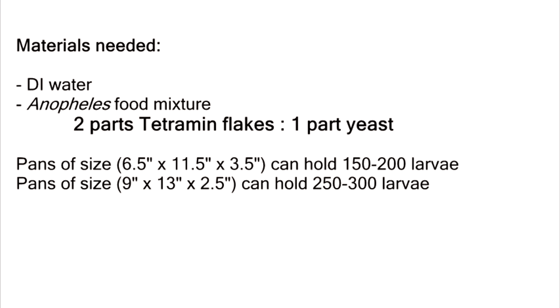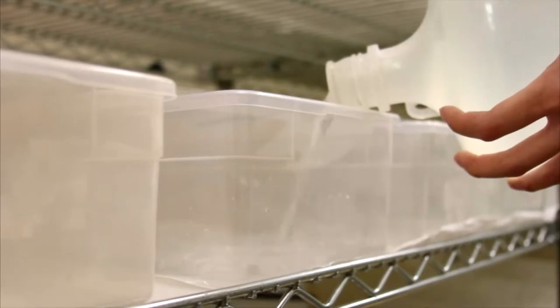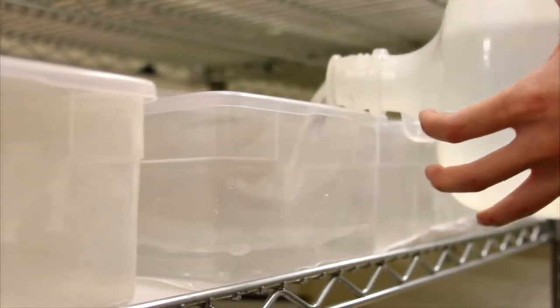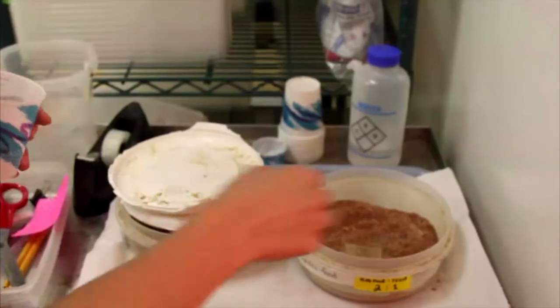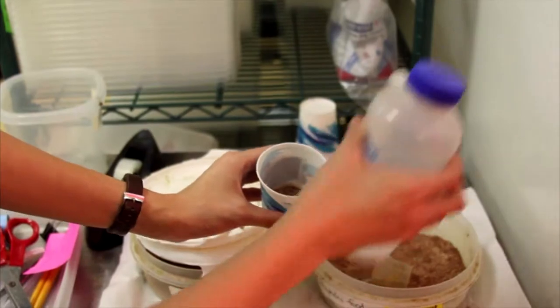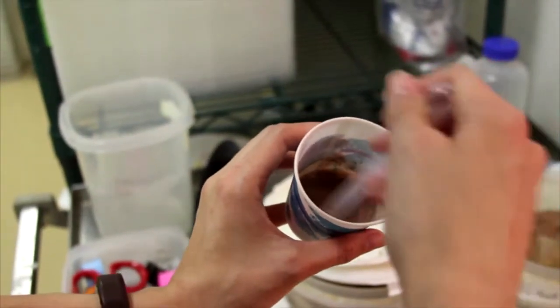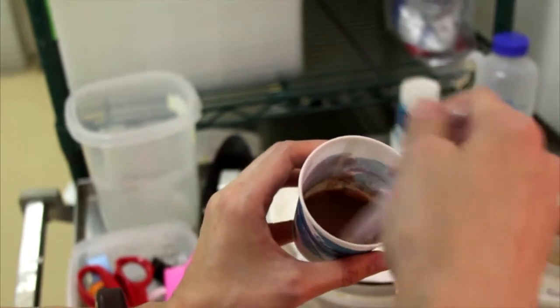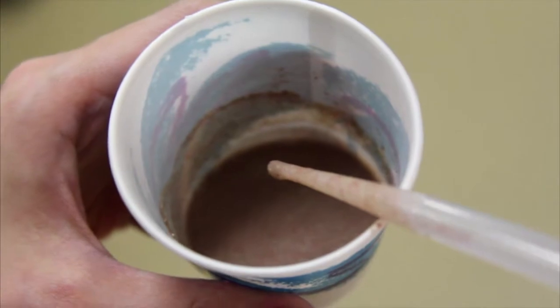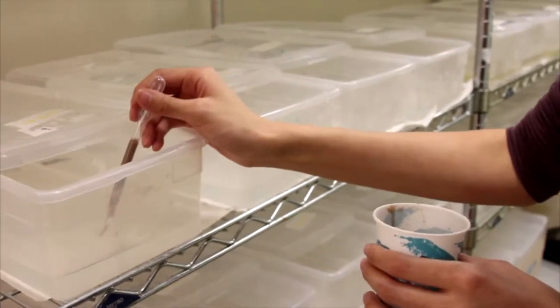Larvae hatch three days after the placement of an egg cup. You'll need DI water and Anopheles larval food. Next, prepare the Anopheles food before adding it to the pan. To make Anopheles food, mix two parts ground tetramin flakes, one part yeast, and add some water to create a slurry. The consistency should be similar to a smoothie. If the slurry is too thick or too watery, it may disperse in the water. Use a pipette to add a dime sized amount of food on the bottom of the pan.